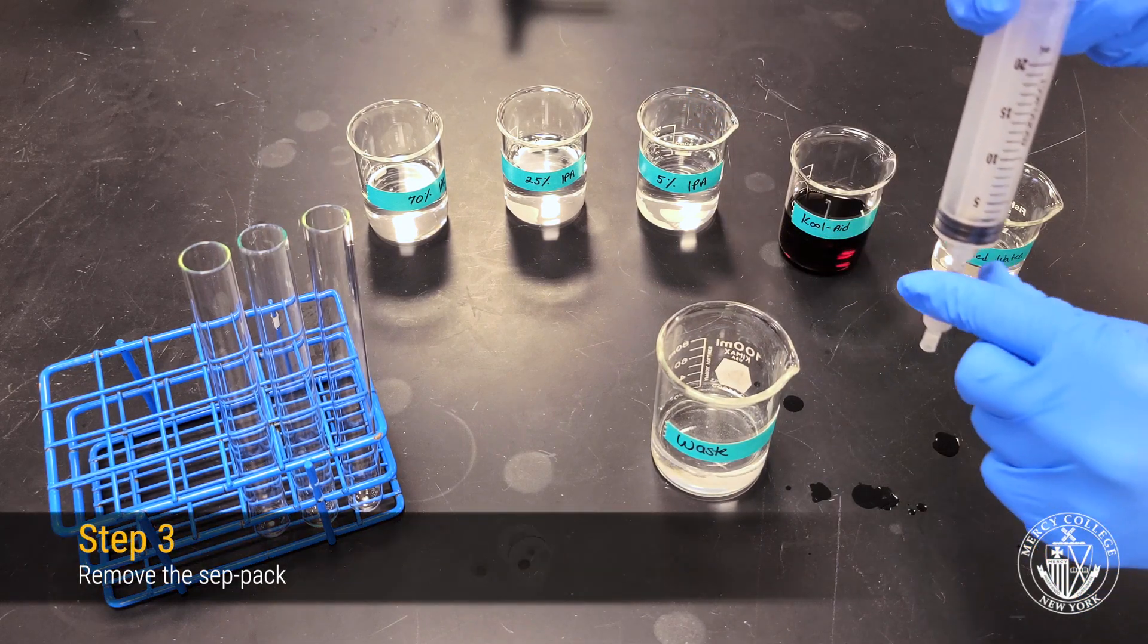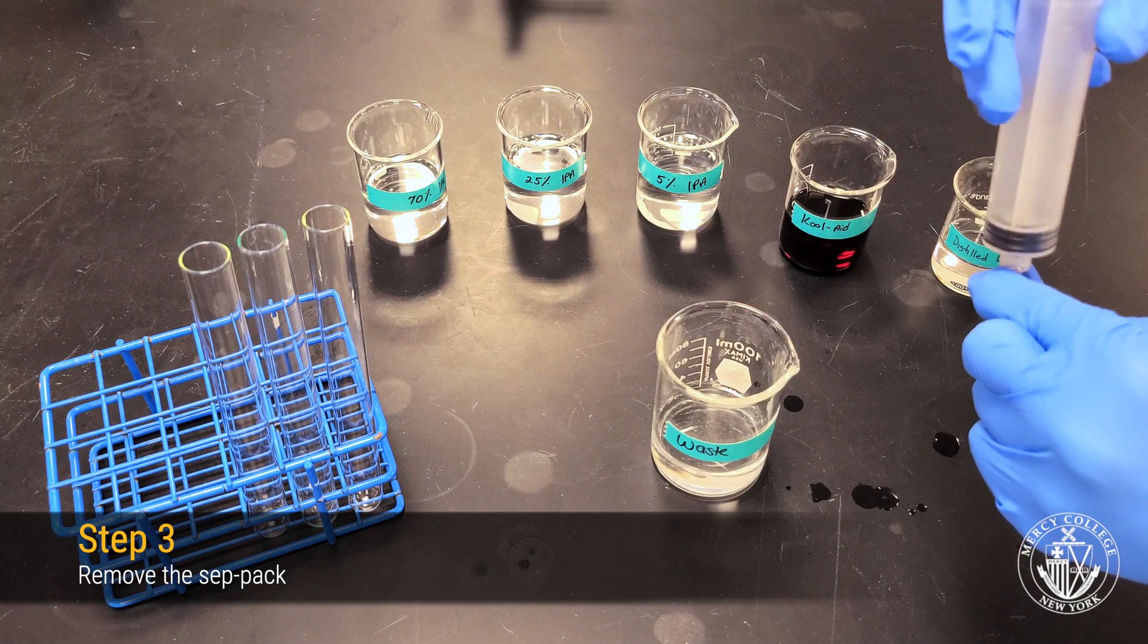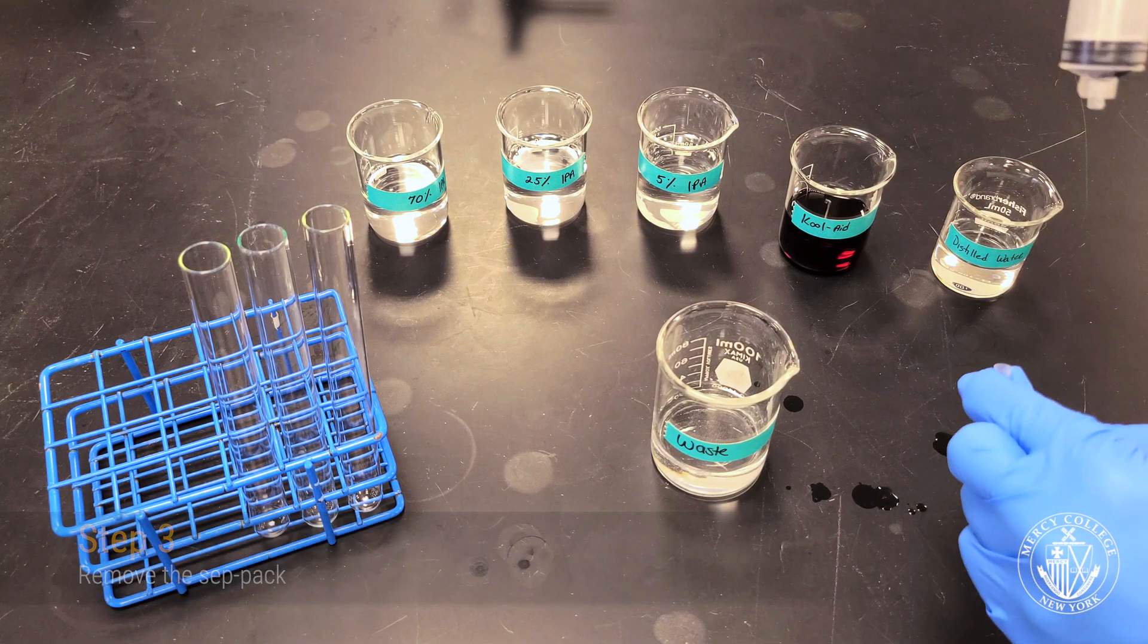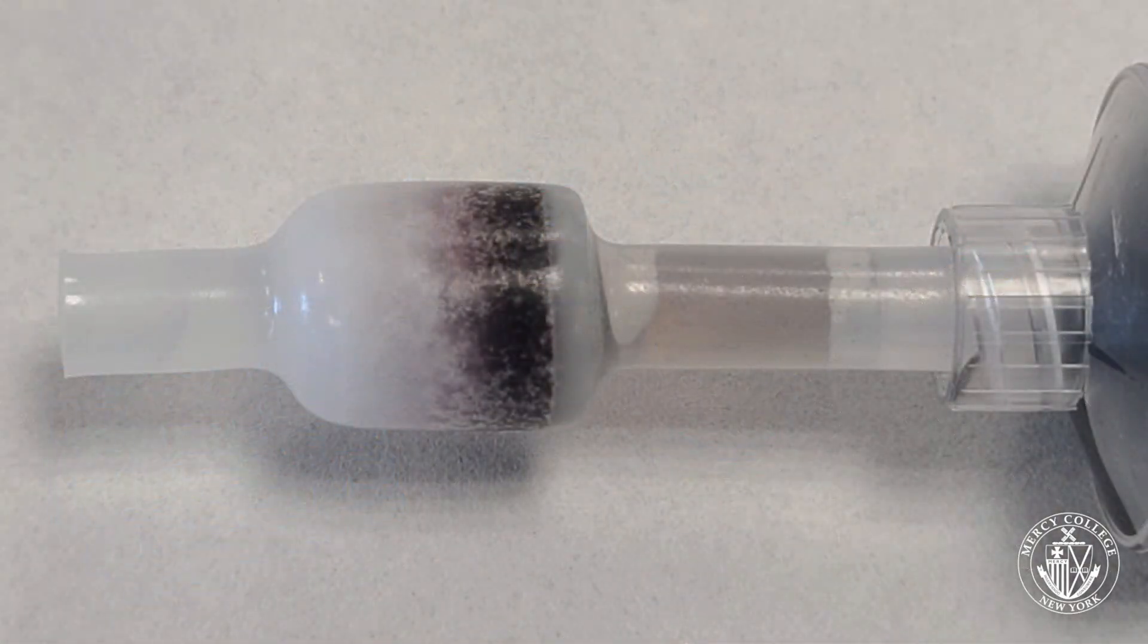Once you're done loading the column with the Kool-Aid mixture, remove the CEPPAC cartridge. A successfully loaded CEPPAC column will look something like this.